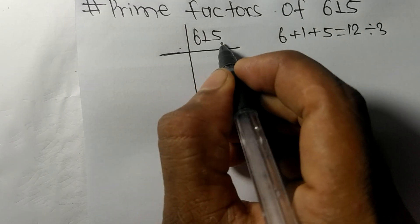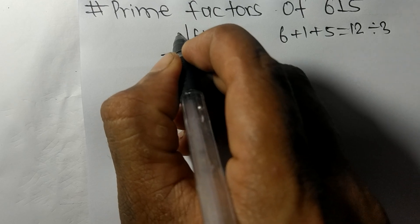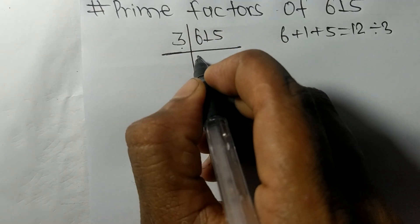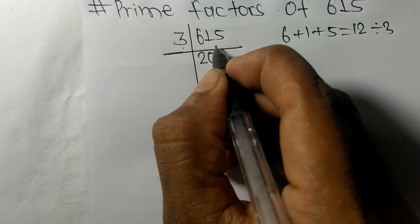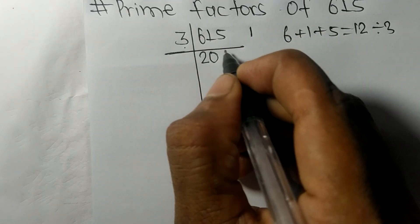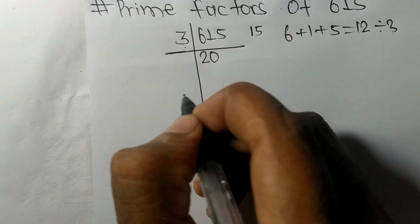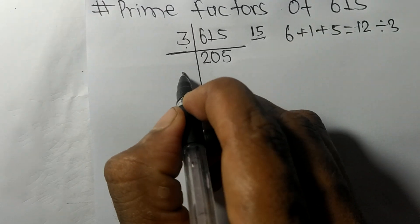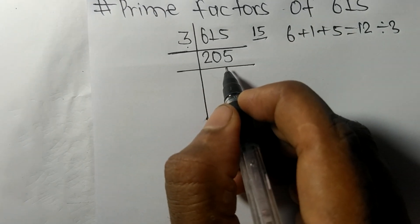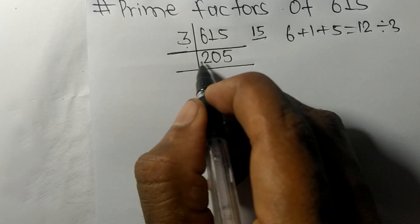So this whole number is also divisible by 3. 3 times 2 is 6, 3 times 0 is 0 with remainder 1, and this 5 makes 15, 3 times 5 is 15. Now we got 205, and it is exactly divisible by 5.